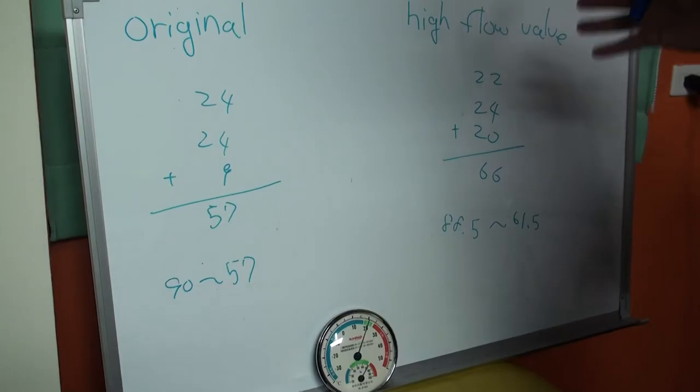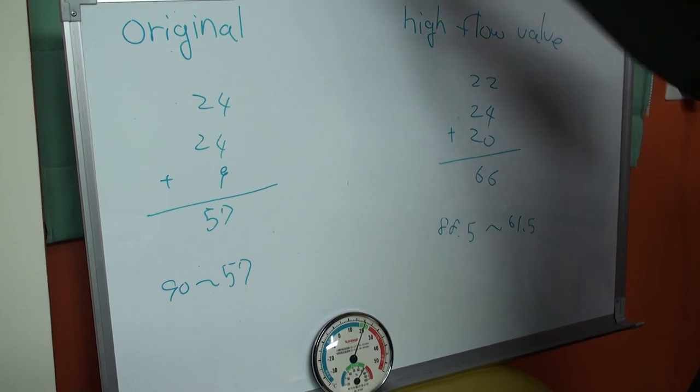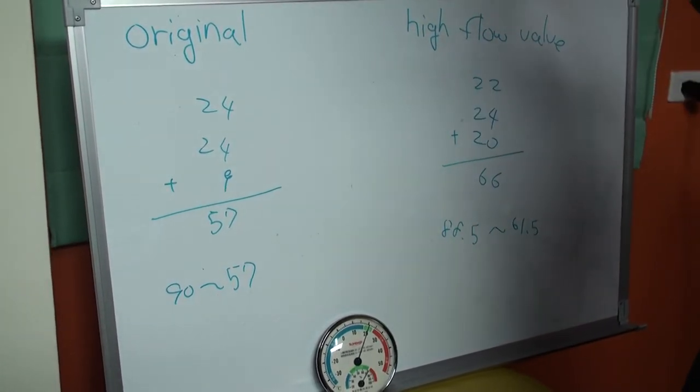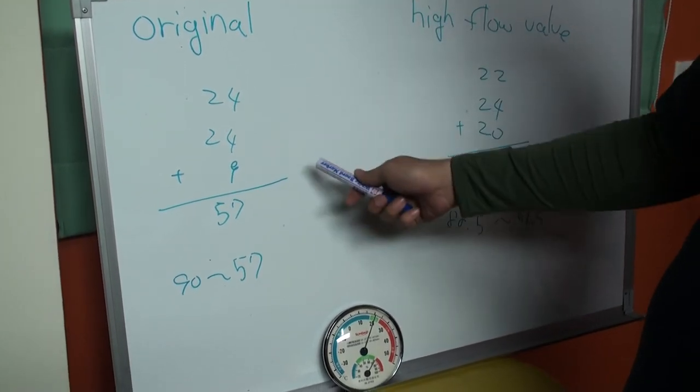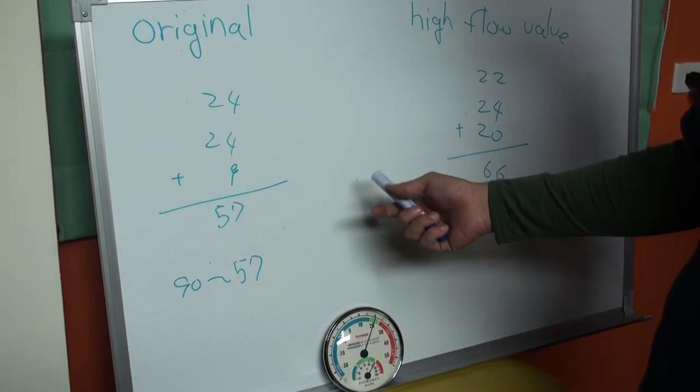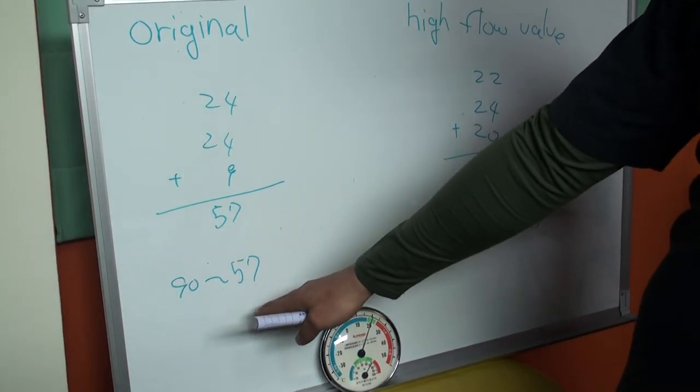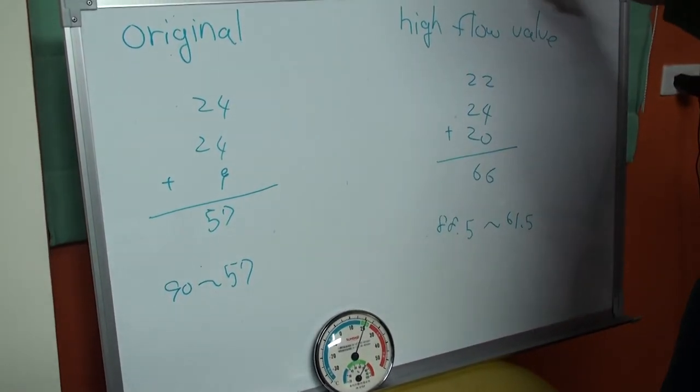This is our test today. We test the original and the high flow valve. The test sample is the Glock 17. The original fired about 57 rounds and the FPS dropped from 90 to 57. And the high flow valve fired 66 rounds.